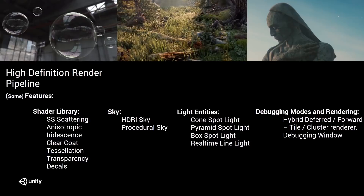Here are some of the many features within the High Definition Render Pipeline. Some of the most interesting stuff is in the Shader Library and the materials. We have Subsurface Scattering, Anisotropic, Iridescent, Clearcoat, Tessellation, Transparency, and Decals — and a lot of this I do cover in my demo.